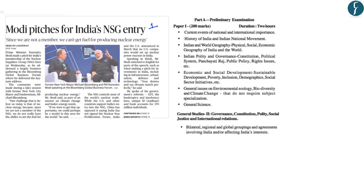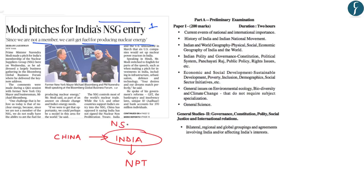The first news appears on page number one. It says Modi pitches for India's NSG entry, that is Nuclear Suppliers Group. The Prime Minister said that since we are not a member of NSG, we cannot get fuel for producing nuclear energy. However, India's entry into NSG has been blocked by China, because China says that since India has not signed the Non-Proliferation Treaty, India cannot join NSG. This topic is very important because questions can be asked on the purpose and formation of NSG as well as NPT, and India's push for NSG entry gains significance.